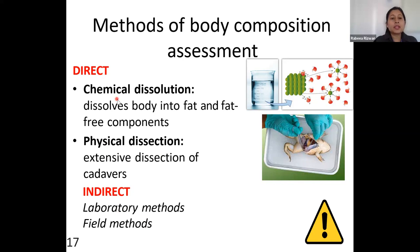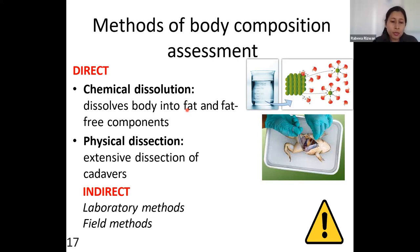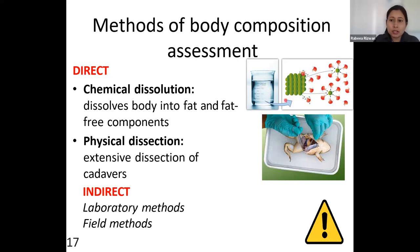The direct method involves introducing a chemical into the body to examine its microscopic composition, splitting it into fat and fat-free components such as minerals like calcium and magnesium, and proteins like amino acids. Physical dissection means physically opening the body to evaluate what it is composed of. This is an extensive dissection of cadavers — dead bodies — and is not performed on living human beings. These procedures are used for autopsies or forensic cases.